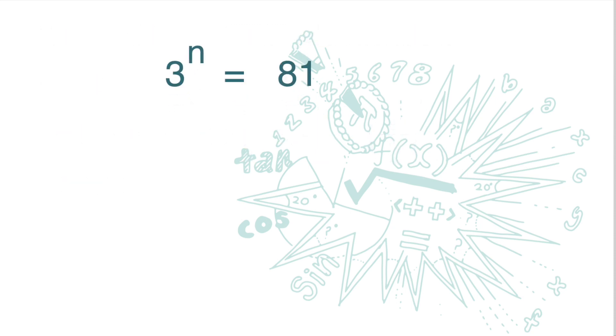How about this question? 3 to the power of n equals 81. Find n. We want to find n. Now, here we have base 3 and index n. What we need to do is to convert the number 81 into index notation with base 3.